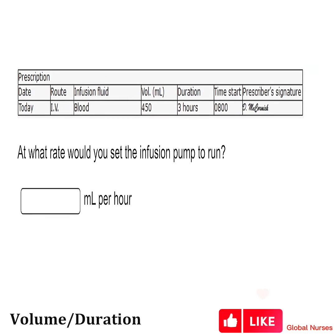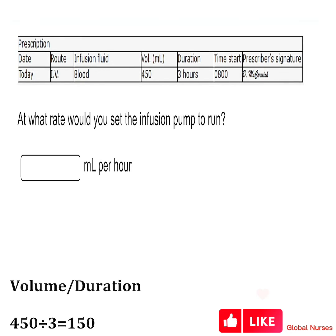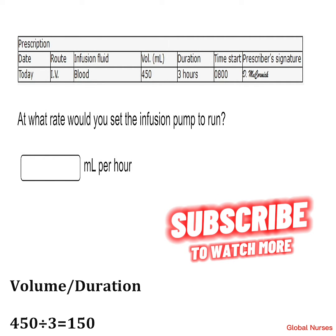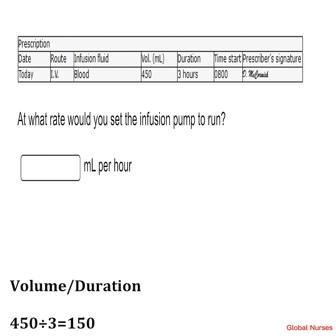The last-but-one question: at what rate would you set the infusion pump to run? We have an infusion fluid given IV. The volume is 450 ml and the duration is three hours. You divide the volume by the duration: 450 divided by 3. Our answer is 150 ml per hour.